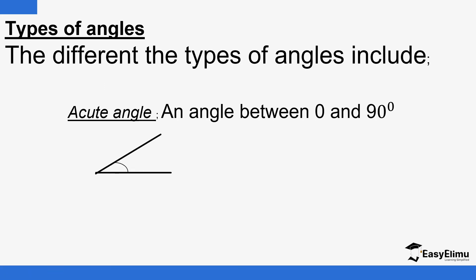We have different types of angles. An angle is formed when two lines meet — the space in between them is what we call an angle. The way that space is formed between the two intersecting lines will determine the type of angle formed. If the angle is between zero and 90 degrees, we call it an acute angle.